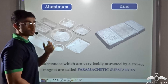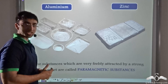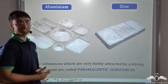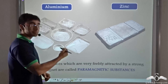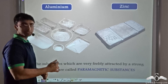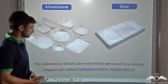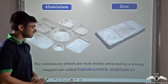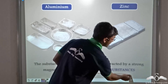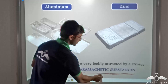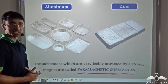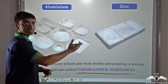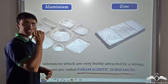We found that aluminium was feebly attracted by a magnet, and the same is the case with zinc — zinc is also feebly attracted by a magnet. Such substances which are very feebly attracted by a strong magnet are known as paramagnetic substances. The force of attraction between the magnet and these substances is very, very feeble.